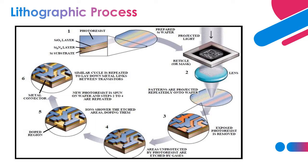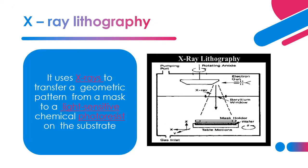The difference is in the source of light used during the process. For photolithography, UV light is used, and for X-ray lithography, X-ray light is used. X-ray lithography uses X-ray to transfer a geometric pattern from a mask to a light-sensitive chemical photoresist on the substrate.